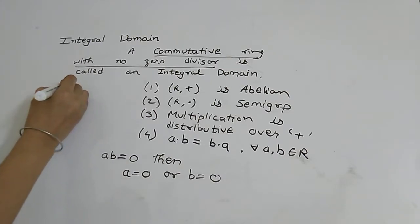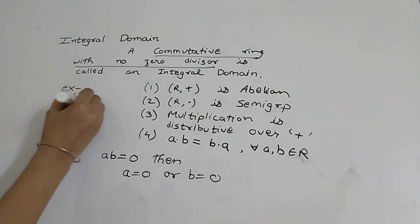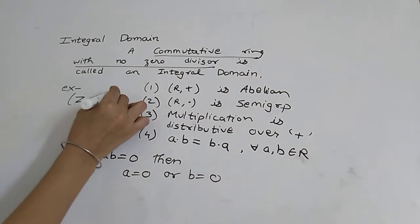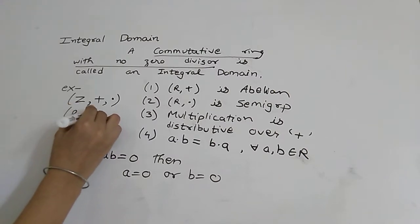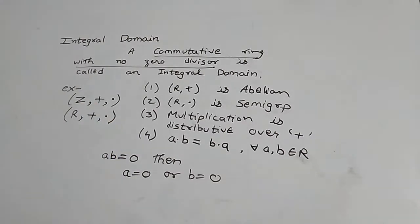Now let's see examples. So Z, that is the ring of integers under addition and multiplication, is an integral domain. Set of reals under addition and multiplication is also an integral domain. Now let's see examples of what is not an integral domain.